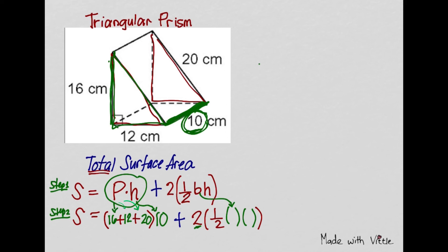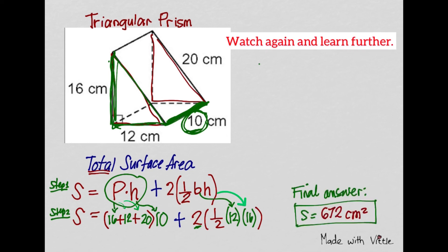The base here is this 12, and the height of that triangle is the 16. This is what you're going to enter on your calculator. Total surface area of the triangular prism is 672 cm².